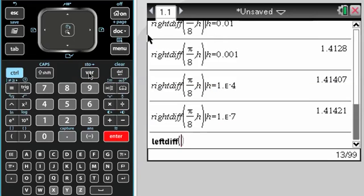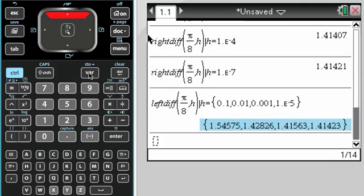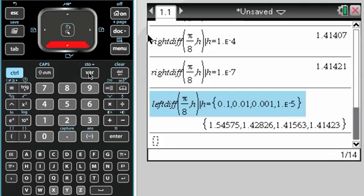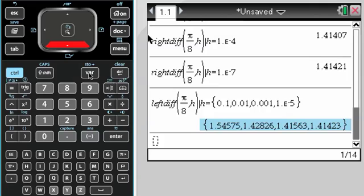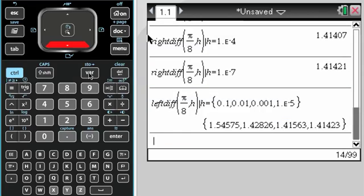And then finally, do a left difference quotient, pi over 8, comma h, set it at h equals. In this case, I'm going to put in a couple at one time: 0.01, comma 0.01, comma 0.001, comma 0.0001. I get that. And you can see the left one still doesn't agree to five decimal places. So it just kind of converges on the actual value a little more slowly than the right and the symmetric in this particular case. It's not always the case.